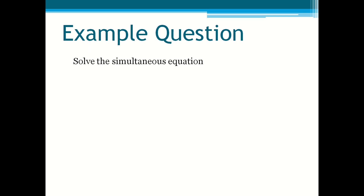Here's an example question to show how it works. Solve the simultaneous equation: 4x + 2y = 10 and 5x + 3y = 12. Usually go for the variables whose product is a smaller number so that you don't have to work with really big numbers. So here 2 and 3 will have a smaller product of 6, instead of using 4 and 5 which will be 20.